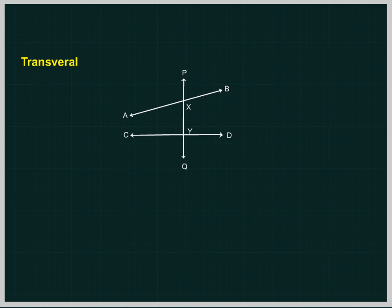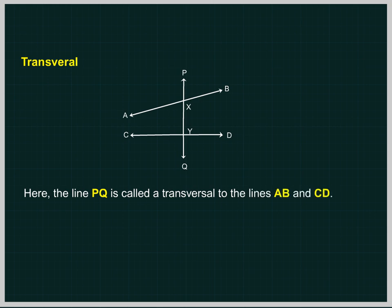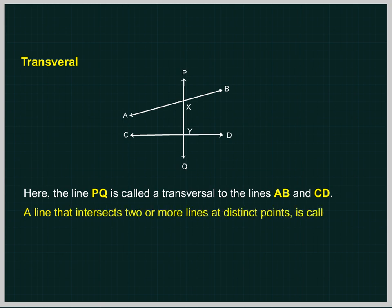Transversal. AB and CD are two lines in the same plane. PQ intersects AB at X and CD at Y. Here, the line PQ is called a transversal to the lines AB and CD. A line that intersects two or more lines at distinct points is called a transversal.